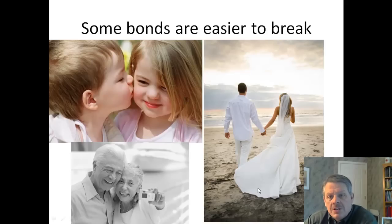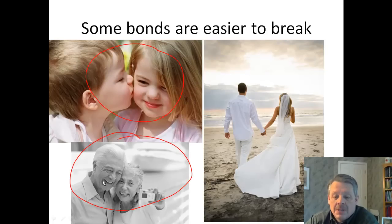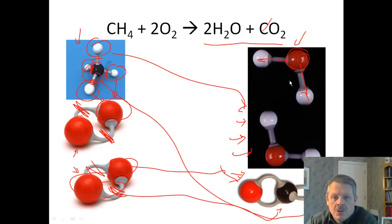Some bonds are easier to break and some bonds are harder to break. The bonds on the left side of the reaction are easier to break, while the bonds that form on the right side — the products — are going to be harder to break.